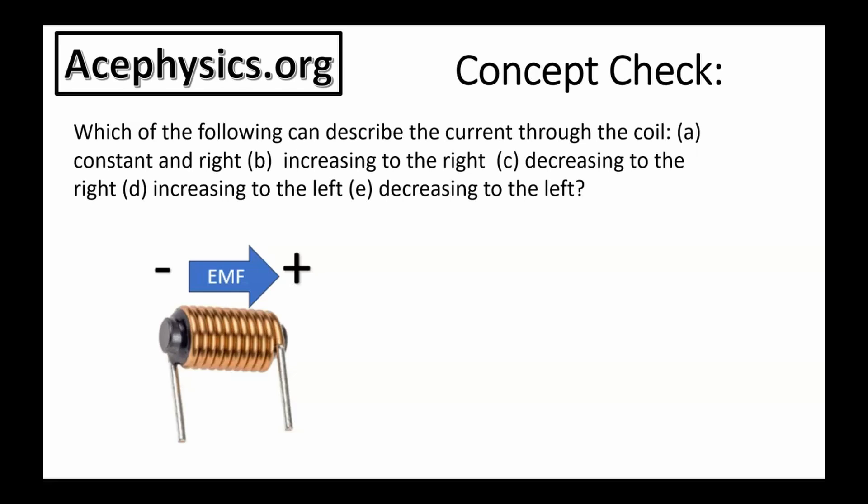And here's a concept checker. Which of the following can describe the current through the coil in the diagram? A, constant and to the right. B, increasing to the right. C, decreasing to the right. D, increasing to the left. E, decreasing to the left.